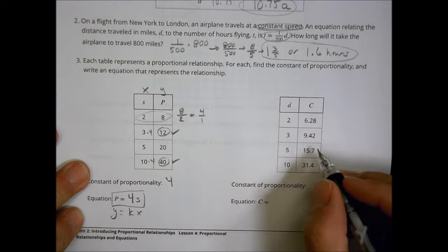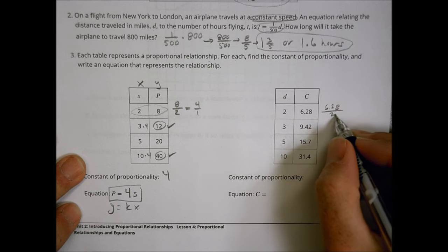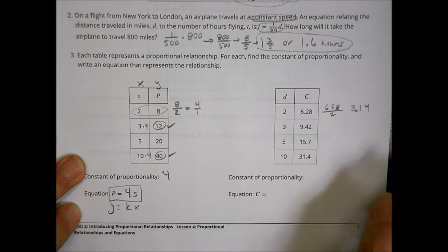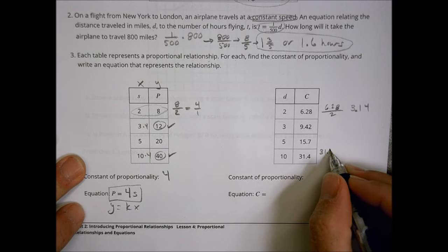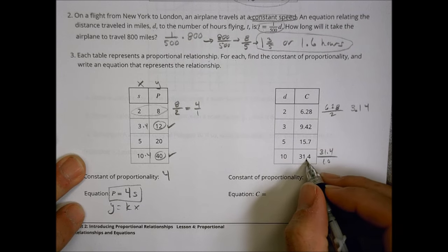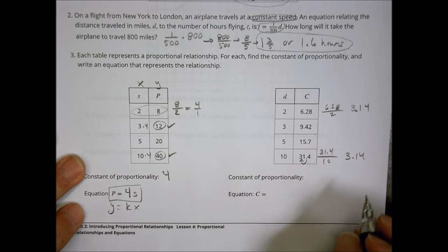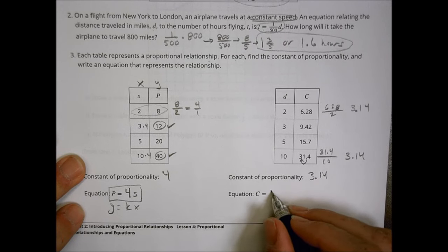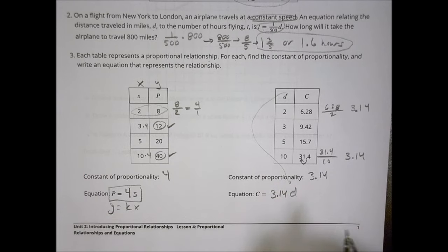Over here, to find my constant proportionality, a little shortcut. I could do 6.28 divided by 2. It's not too bad. Half of 6 is 3. Half of 2 is 1. Half of 8 is 4. 3.14. Or I can use that mental math and say, well, this is also 31.4 divided by 10. When I divide by 10, I move the decimal to the left one spot there. So I have 3.14. Either way, you can figure out that constant proportionality is 3.14. So for my equation, I would say that C equals 3.14 and my other letter, D. 3.14 D.